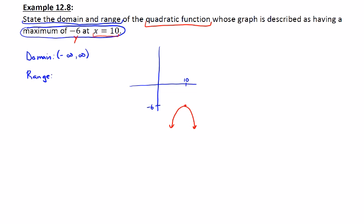The range we can see, because it's going to have to open down, we're going to start with negative infinity and we're going to go all the way to negative 6, and we'll put a hard bracket there. That'll take care of the domain and range that has a maximum of negative 6 at x equals 10.